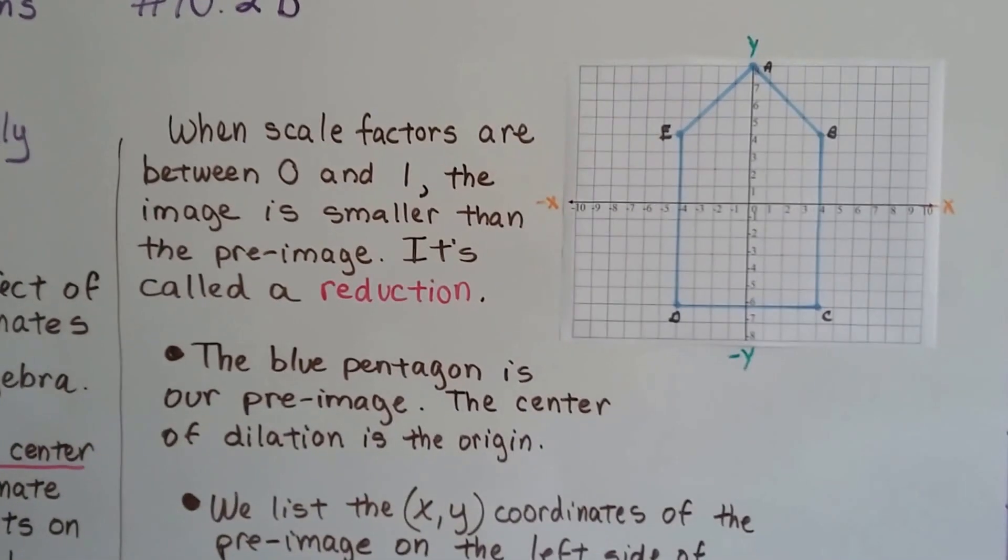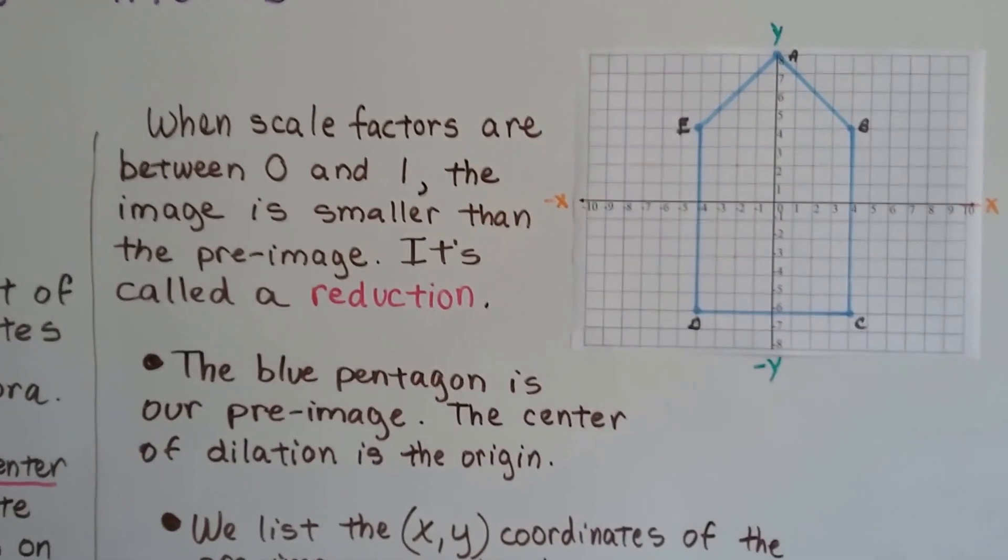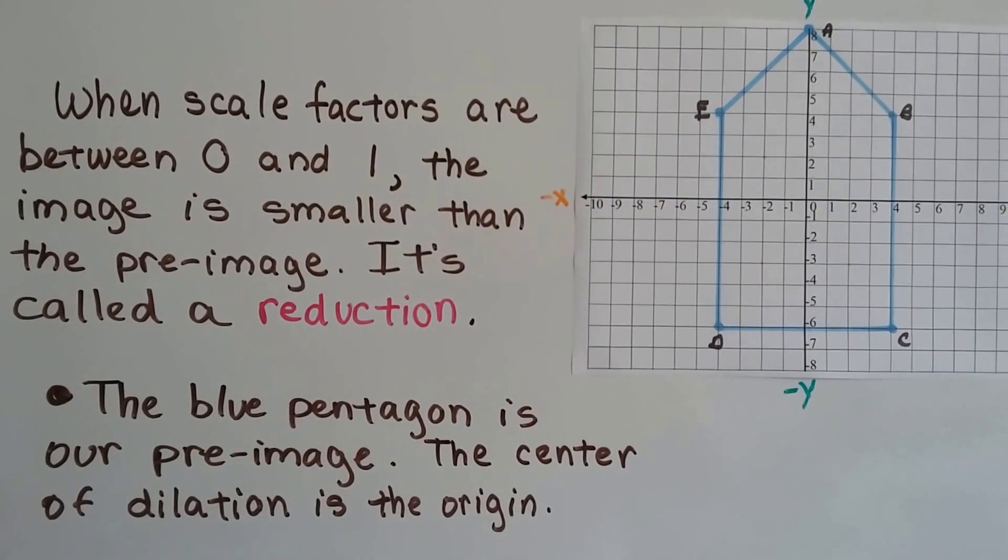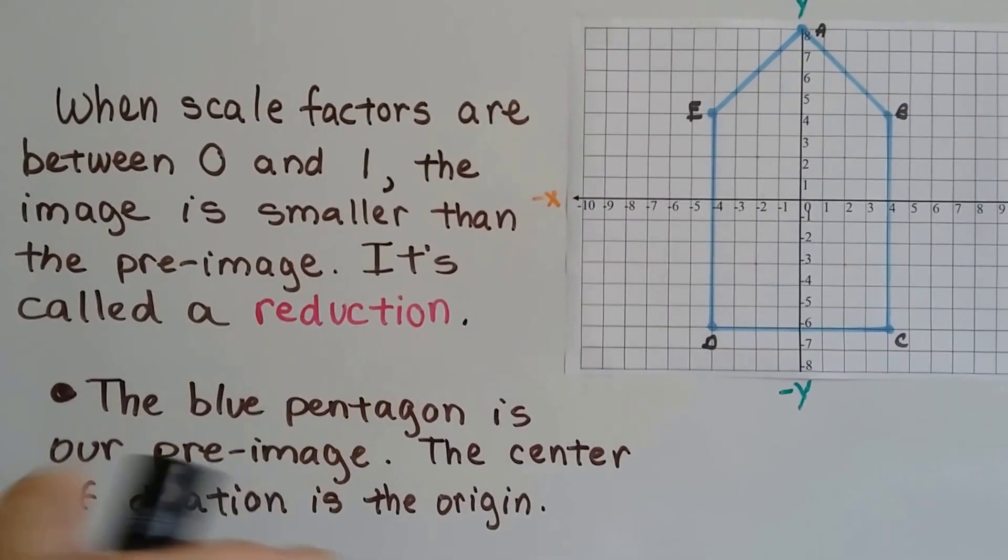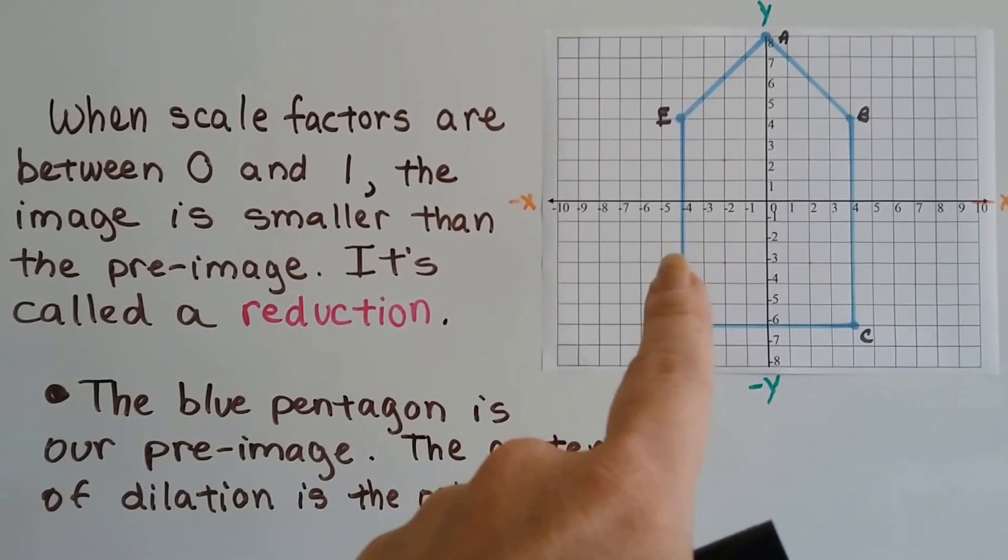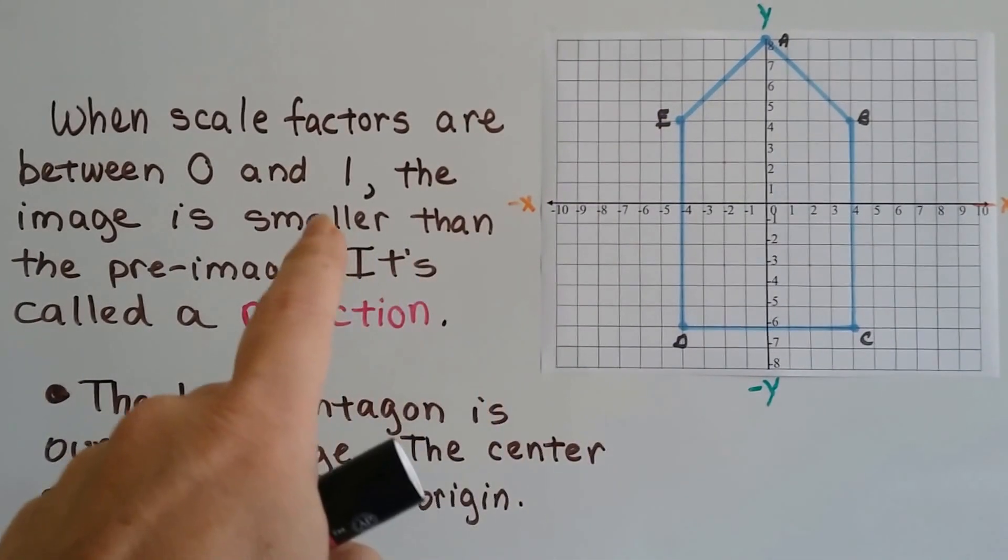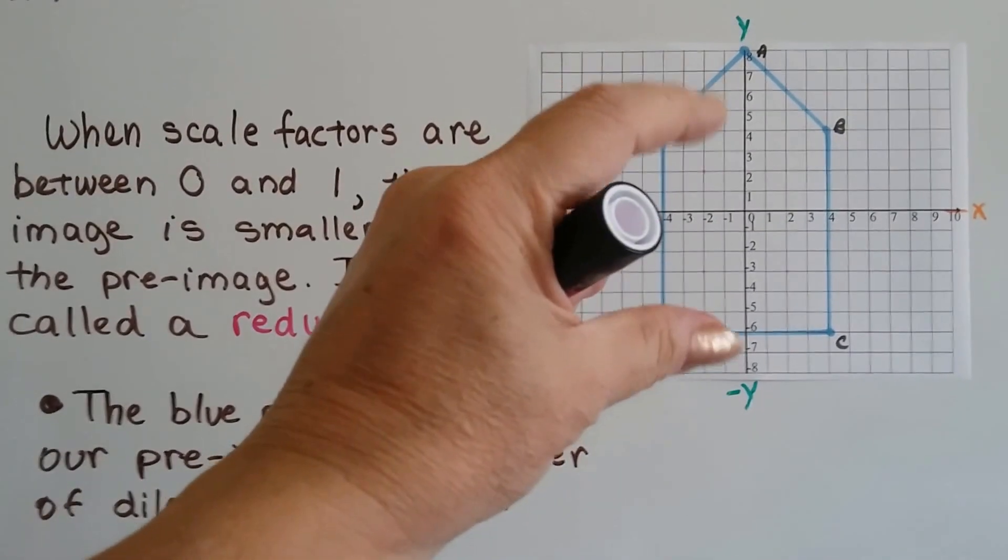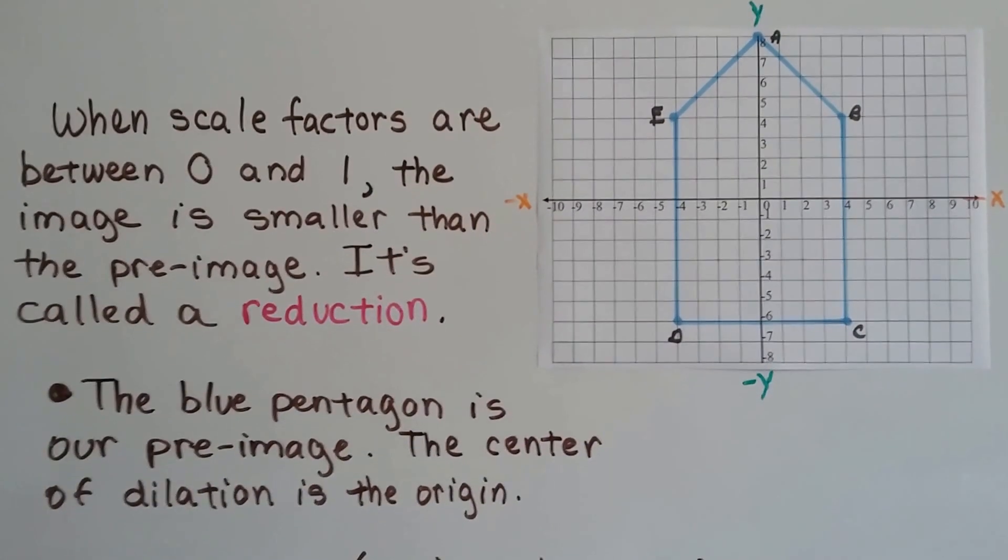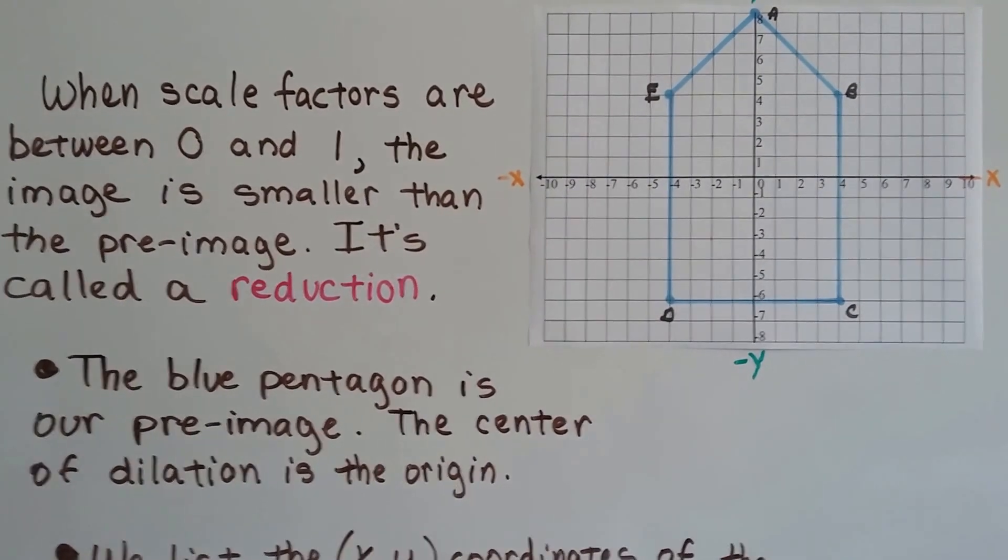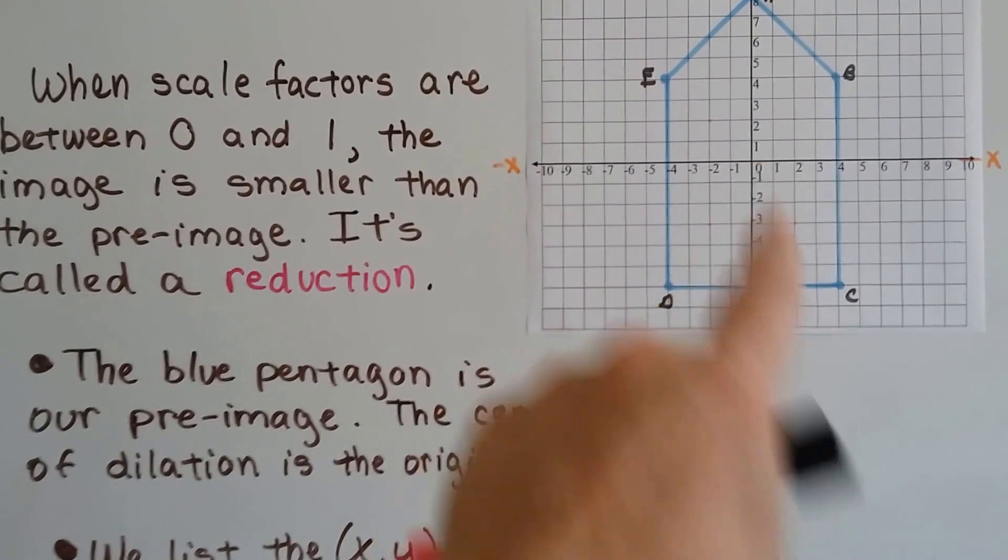So here we've got this house shape, it's a pentagon. And when scale factors are between 1 and 0, or 0 and 1, the image is smaller than the pre-image. So if this blue one is the pre-image and we have a scale factor that's smaller than 1, then our image is going to be a reduction. This blue pentagon is our pre-image, and the center of dilation is the origin, right here at 0, 0.